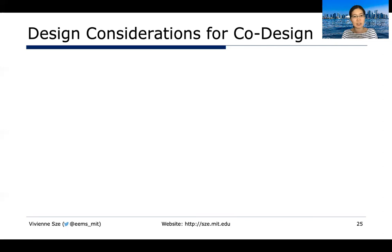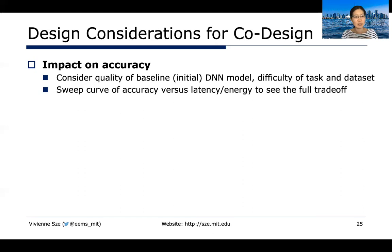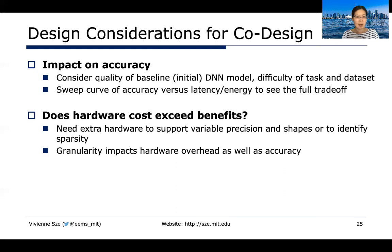Another aspect is co-design — trying to make DNN models more efficient by designing both models and hardware together, achieving what couldn't be done with each individually. The first thing to consider is the impact on accuracy. When discussing accuracy degradation, you should consider the quality of the baseline model — is it already very accurate? What is the difficulty of the task and dataset? Ideally, you should sweep the curve of accuracy versus latency and energy to see the full trade-off, not just report at one particular data point.